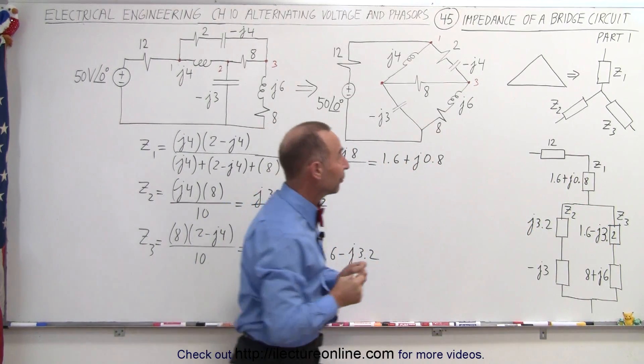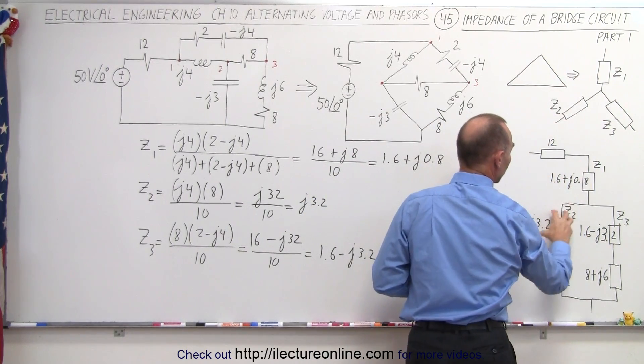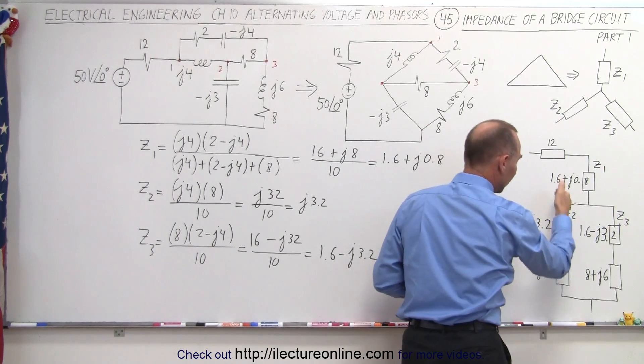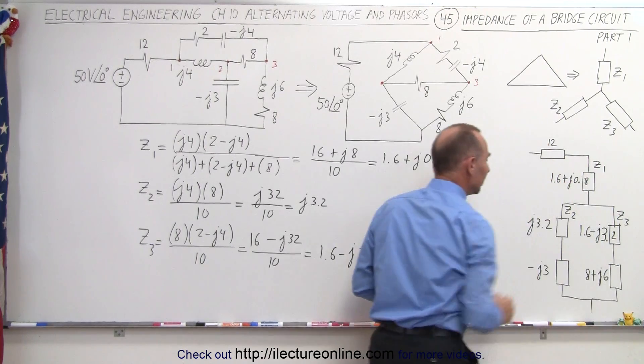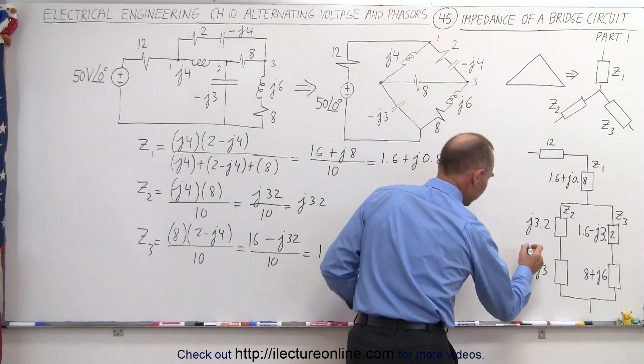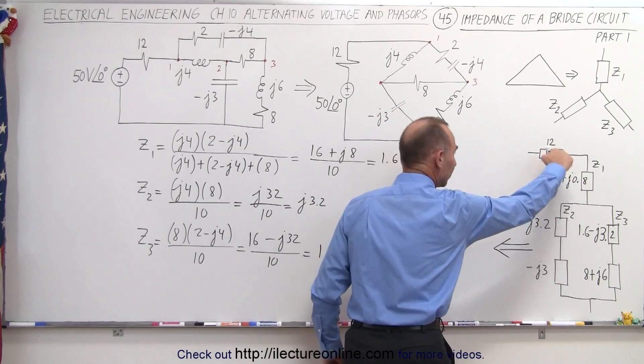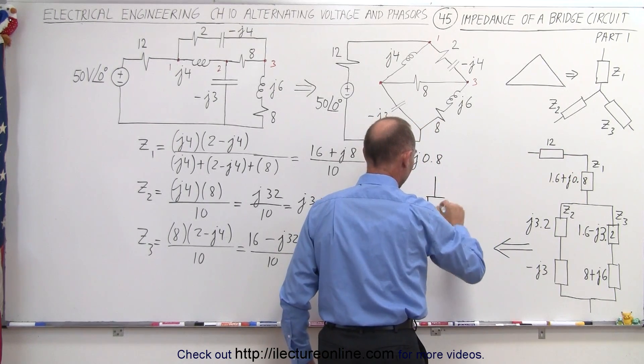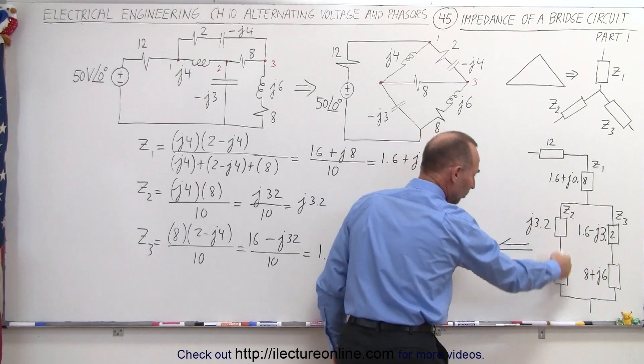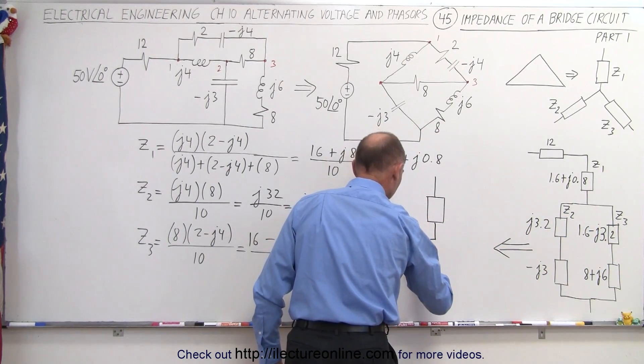So now we have converted our delta into a Y. And notice we have to find the three impedances of the Y. Now these two are easy to add and those two are easy to add. So now we can go ahead and combine this circuit into a simplified circuit. We can combine these two together into a single impedance. And then each of the two branches, we can combine those two impedances into a single impedance on each side of the branch.